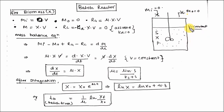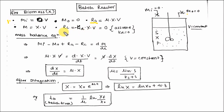Volume is constant in the batch reactor. The first step is to calculate the various parameters for the material balance: Mi is 0, M output is 0. Rate of generation is Mu into X into V, where Mu is the specific growth rate constant. Rate of consumption is minus KD into X into V, which equals 0 if we assume KD equal to 0.